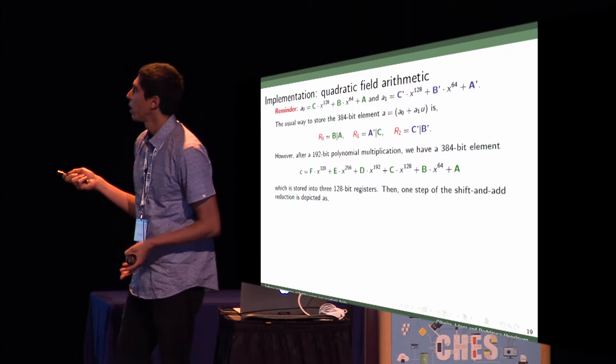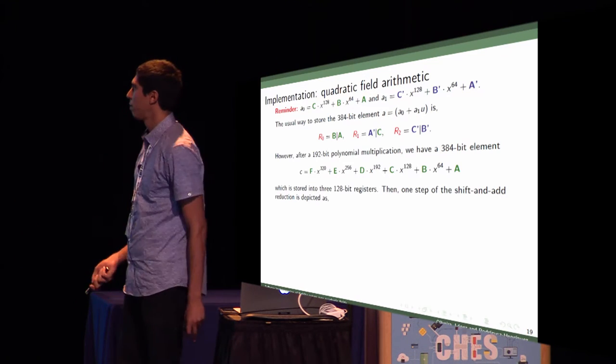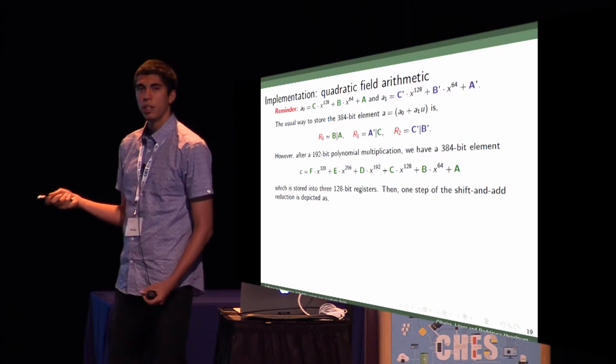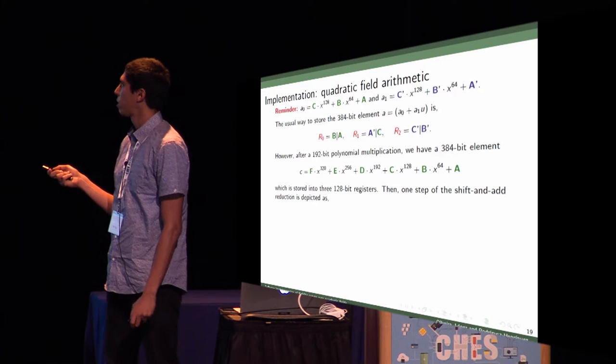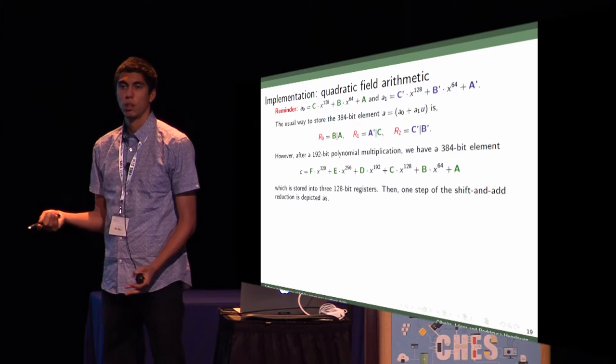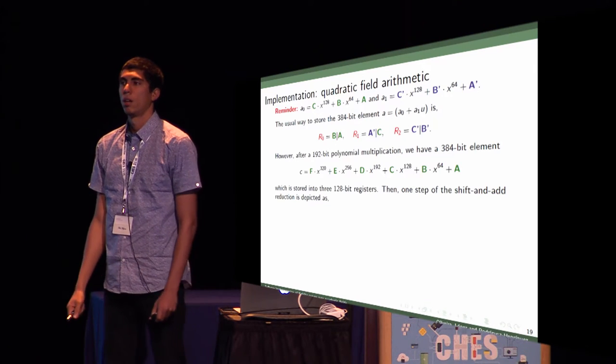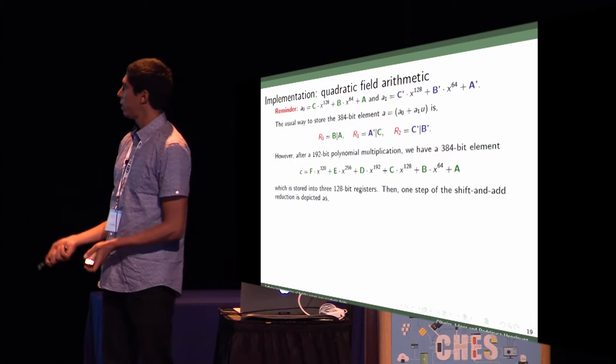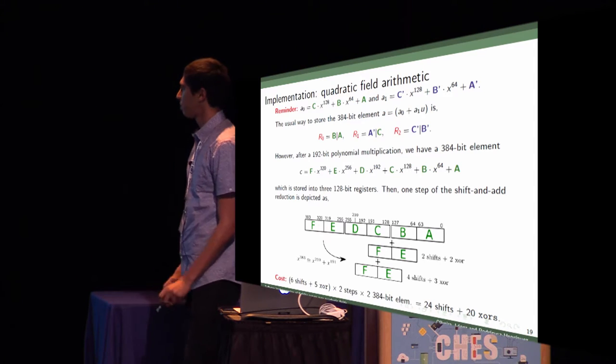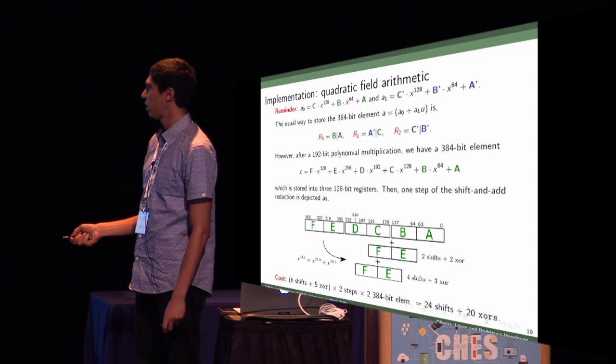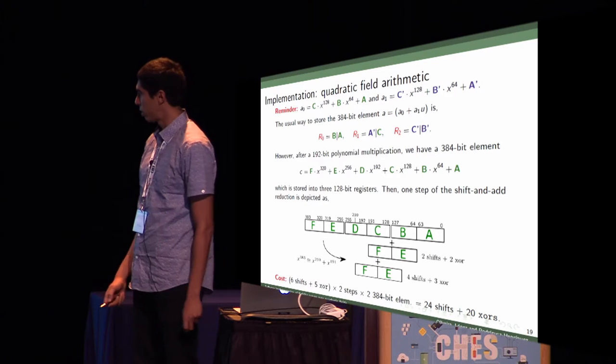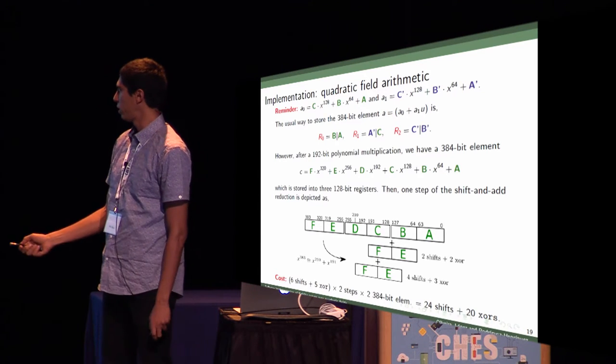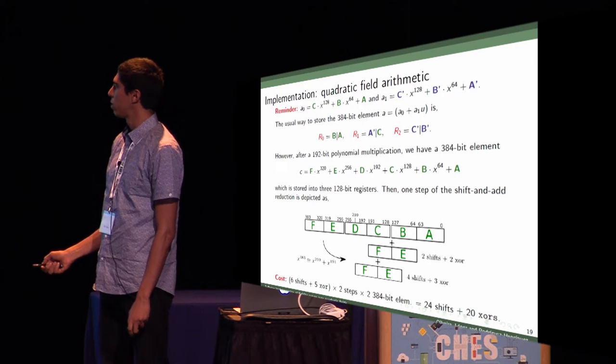However, using Karatsuba multiplications, we have to perform the multiplication separately. For example, one of the terms of the result element after multiplication will be stored in 64-bit words. One step of the reduction will be like this. We have shifts between the registers. This is very complicated reduction, which takes about 24 shifts and 20 XORs, because we need two steps of this and we have two terms to reduce.